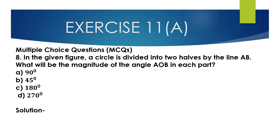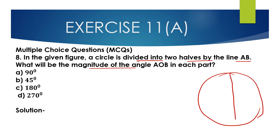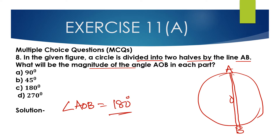Question number 8, Multiple choice questions. In the given figure, a circle is divided into two halves by the line AB. What will be the magnitude of the angle AOB in each part? Let's draw the given circle. This is O, this is A, this is B. The circle is divided into two halves by the line AB — AB is the diameter. Angle AOB is 180 degrees. This is a straight line.